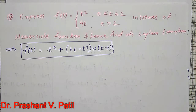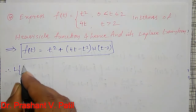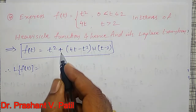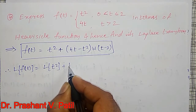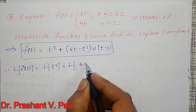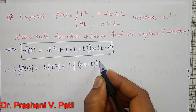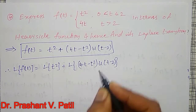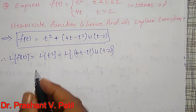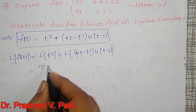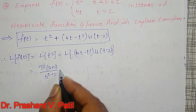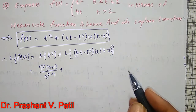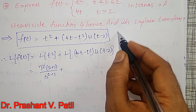To find the Laplace transform, therefore L{f(t)} = L{t²} + L{(4t − t²) · u(t − 2)}. The Laplace transform of t² can be written as Γ(2+1) / s^(2+1). For the second term involving the unit step function, I am going to use the shifting theorem.